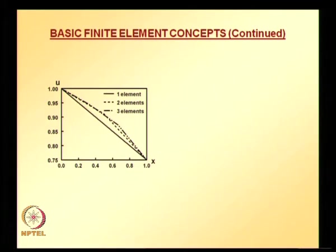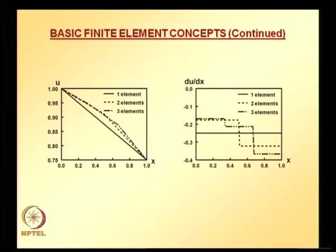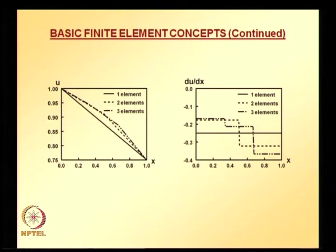A comparative plot of approximate solutions using 1, 2, and 3 elements shows that the solution converges fairly from 2 to 3 elements, whereas the derivative of the approximate solution is still not fully converged when going from 2 to 3 elements.